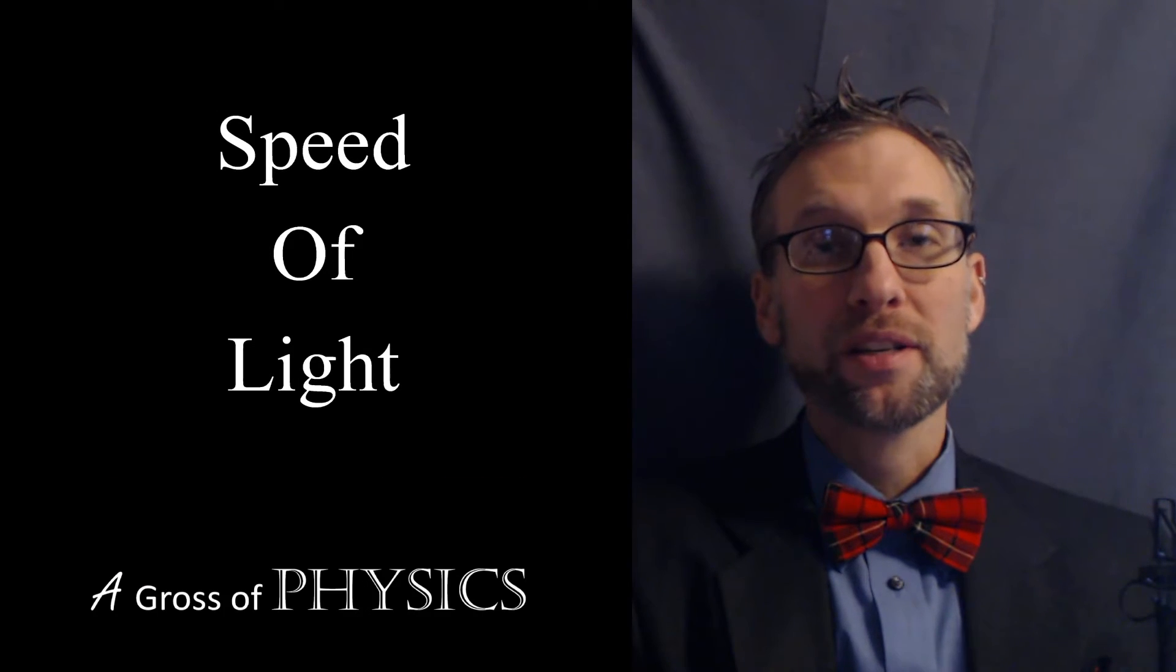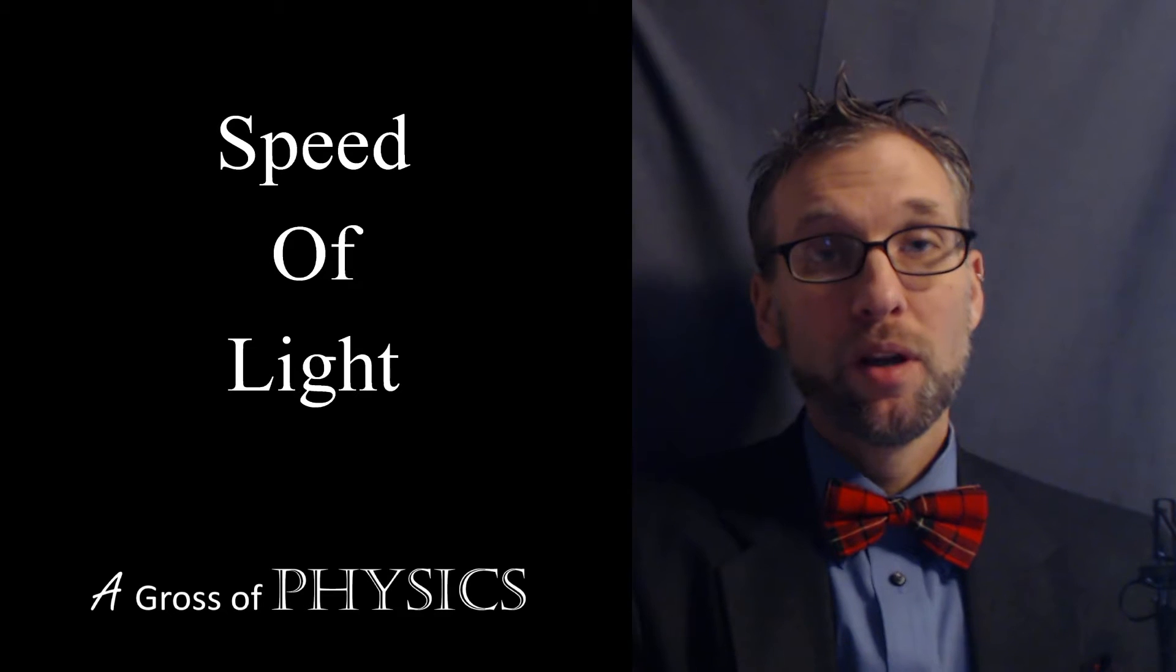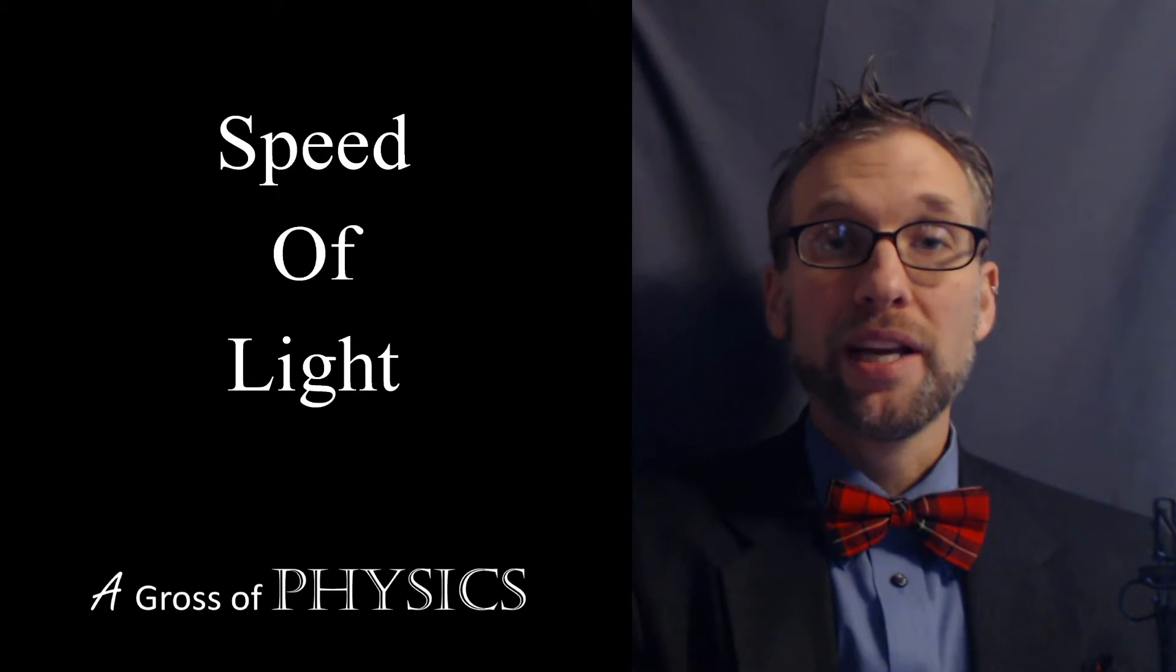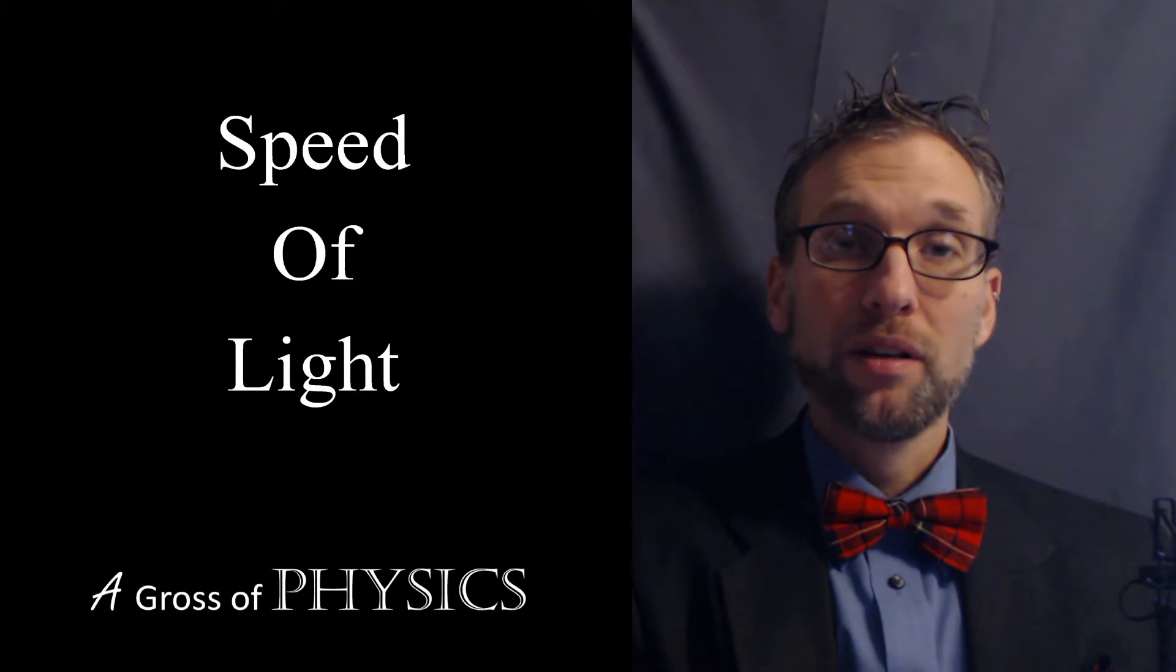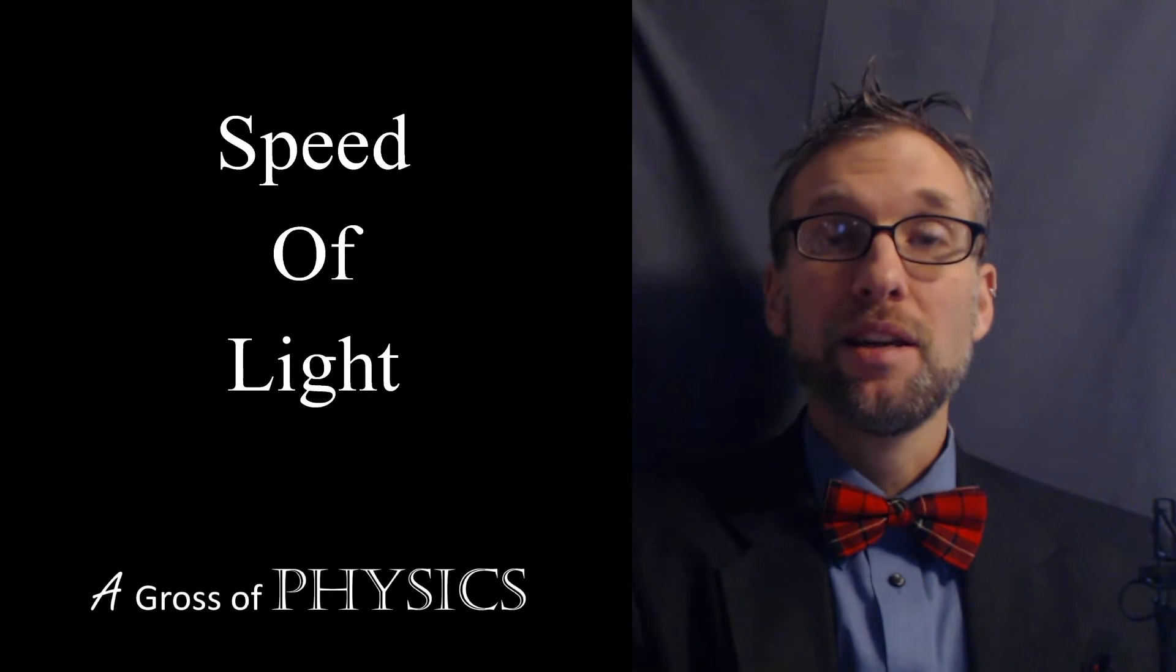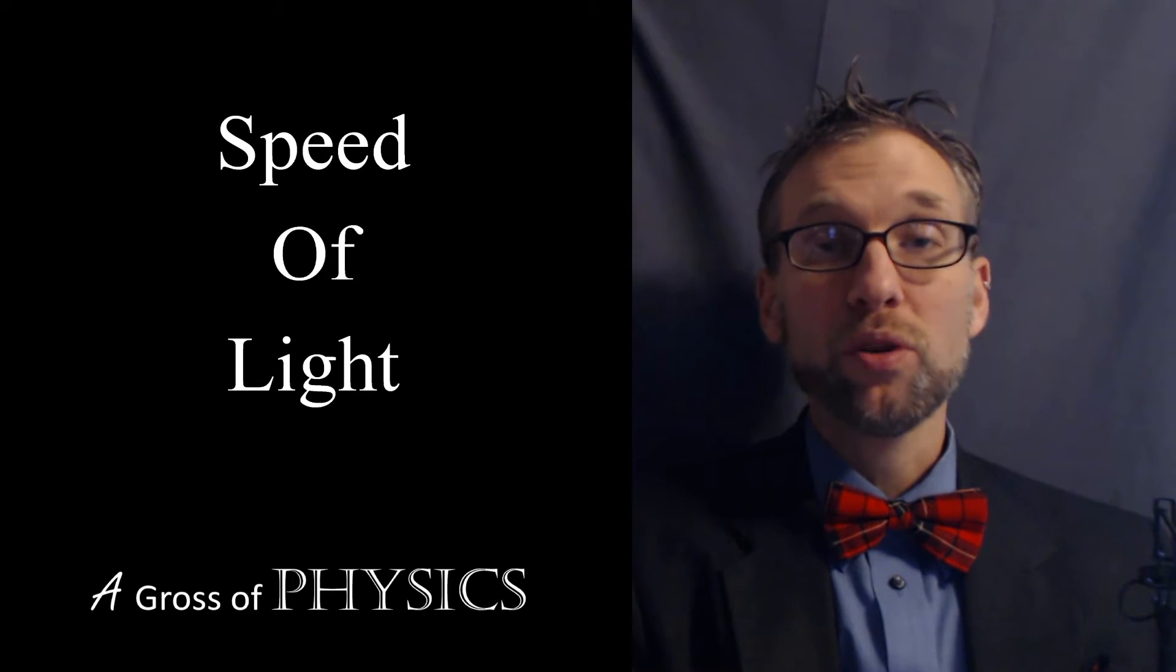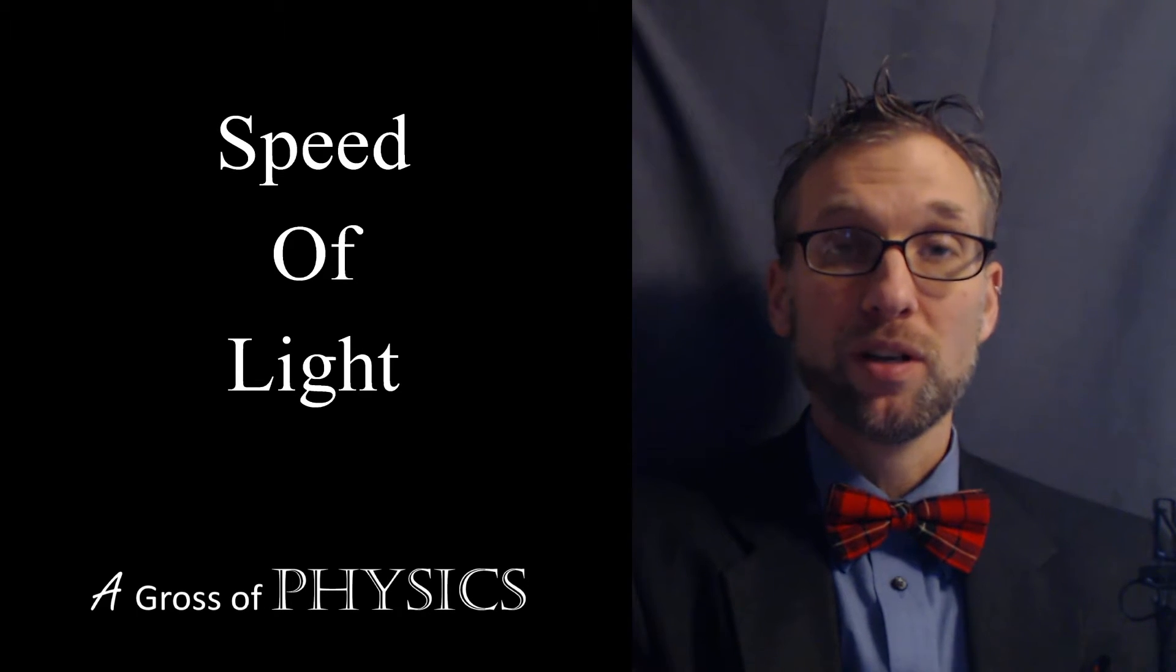Hello, and welcome to A Gross of Physics. Today is day 89, and we're going to start our discussion of light. We just finished our waves chapter, so you already know that light is an electromagnetic wave. Light can travel through the vacuum of space. It doesn't need a material in which to travel through. It can travel through air and other materials, but it will slow down when it goes into those materials.